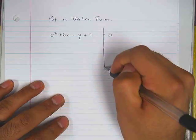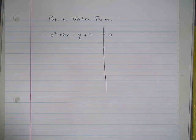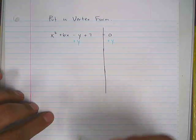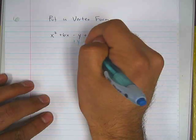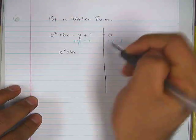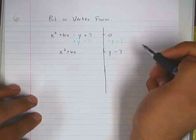Okay, first thing you're going to do, solve for y. Add y to both sides, but at the same time, so I can save myself some steps, I'm going to minus 7, minus 7. This will give me x squared plus 6x equals y minus 7.